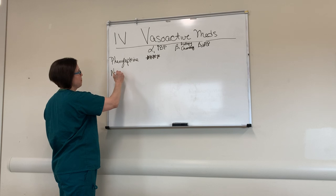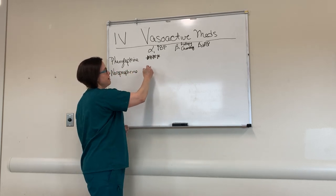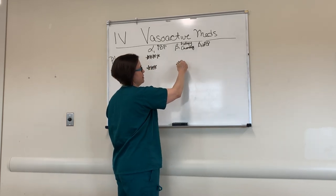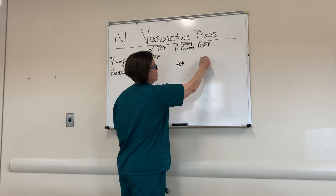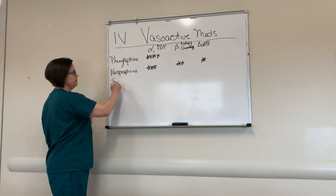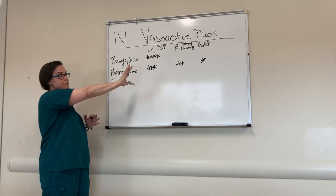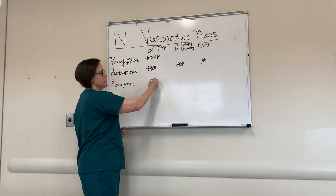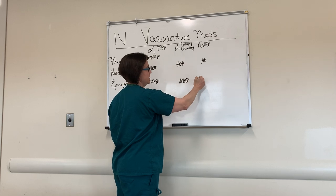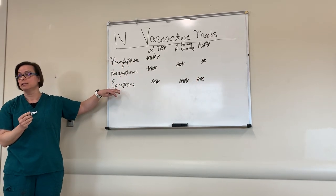Next is norepinephrine. This has a lot of alpha activity but also brings in beta, so you're getting some cardiac squeeze out of it too. Then there's epinephrine — we're shifting further across the spectrum — it still has alpha but also a large beta component. So epinephrine is strongly alpha and strongly beta.